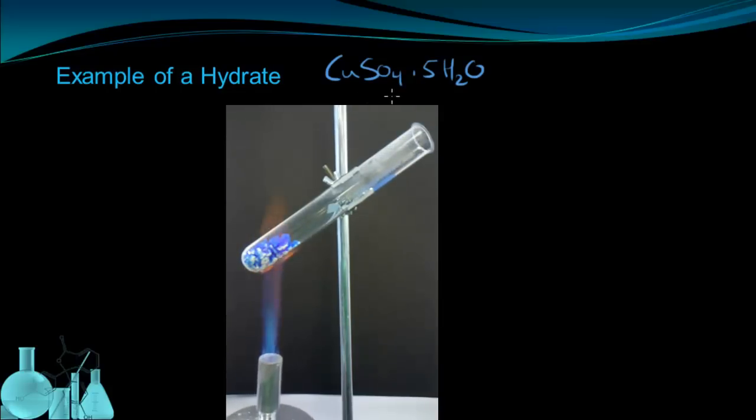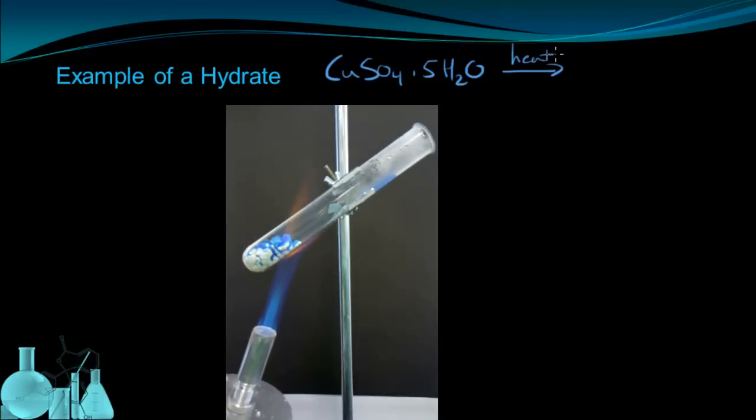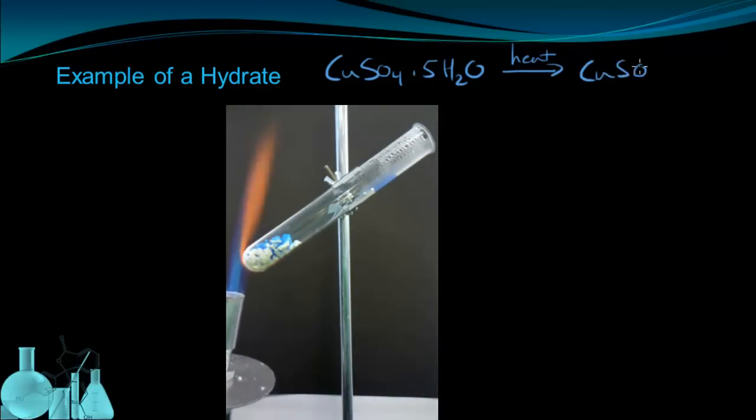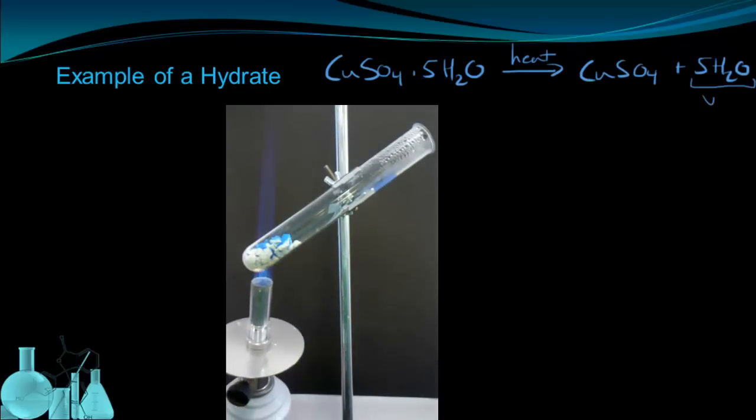So you can see that the copper-2-sulfate pentahydrate is being heated. And as it loses water from the heating, it becomes copper-2-sulfate and five water molecules released as vapor.